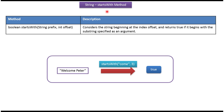Hi, in this video tutorial I will cover the startsWith method. In startsWith method, I am passing the prefix 'come' and the offset 3. This method will check whether this prefix 'come' starts at the index 3 in this string. If the prefix 'come' starts at index 3, then it will return true, else it will return false.